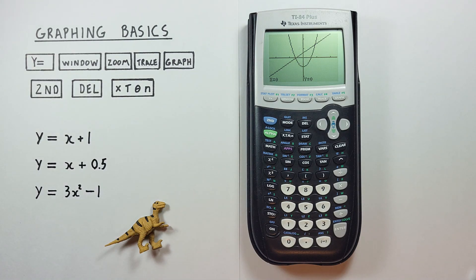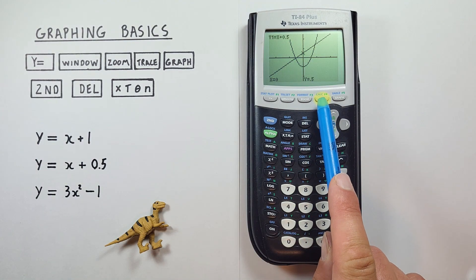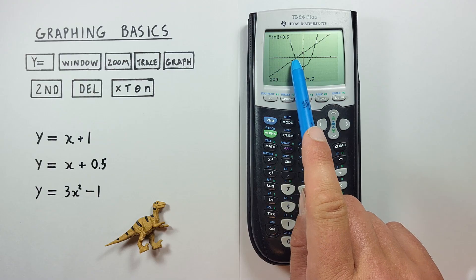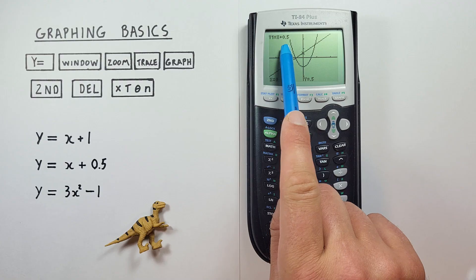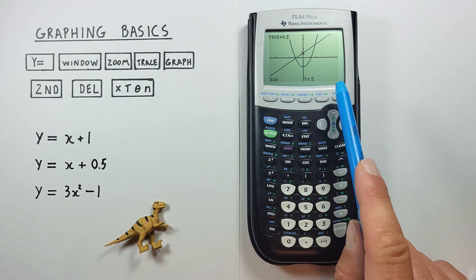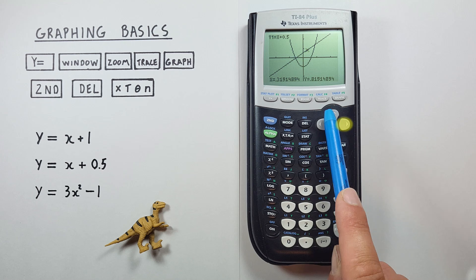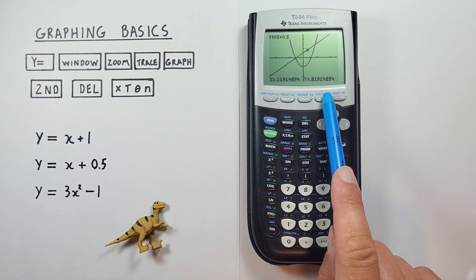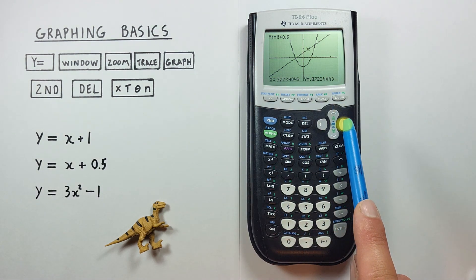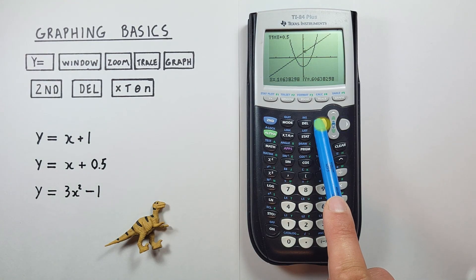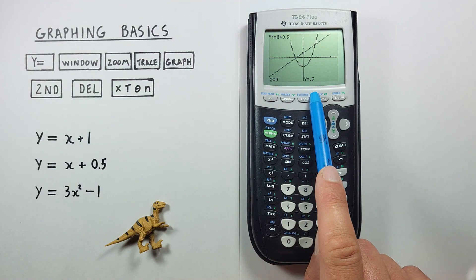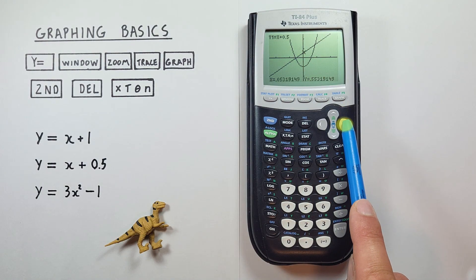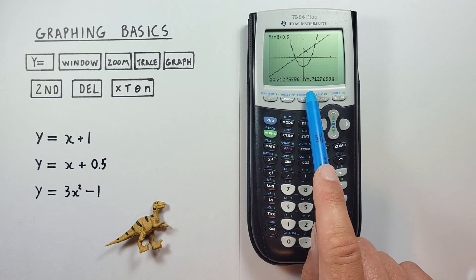If we want to determine exact values along our function, we can use the trace key here. We see our cursor back on the screen and we're tracing the y equals x plus 0.5. If we scroll to the left or right, we see the values at the bottom of the screen change. So we see at x equals 1, y equals 0.5. But if we scroll to the right, our x and y values will change.